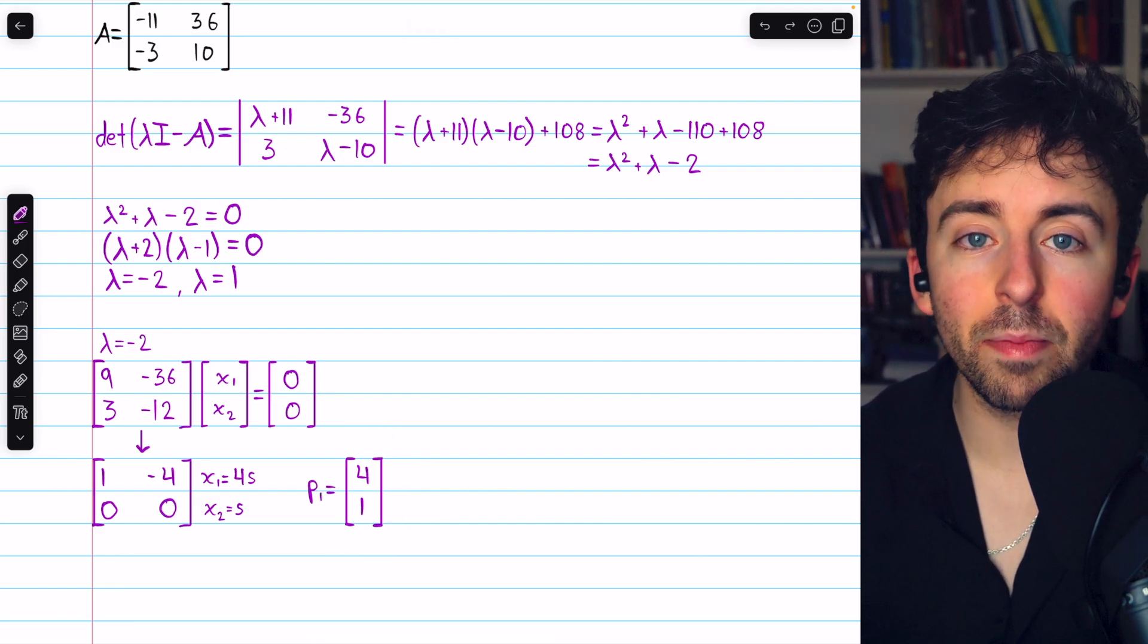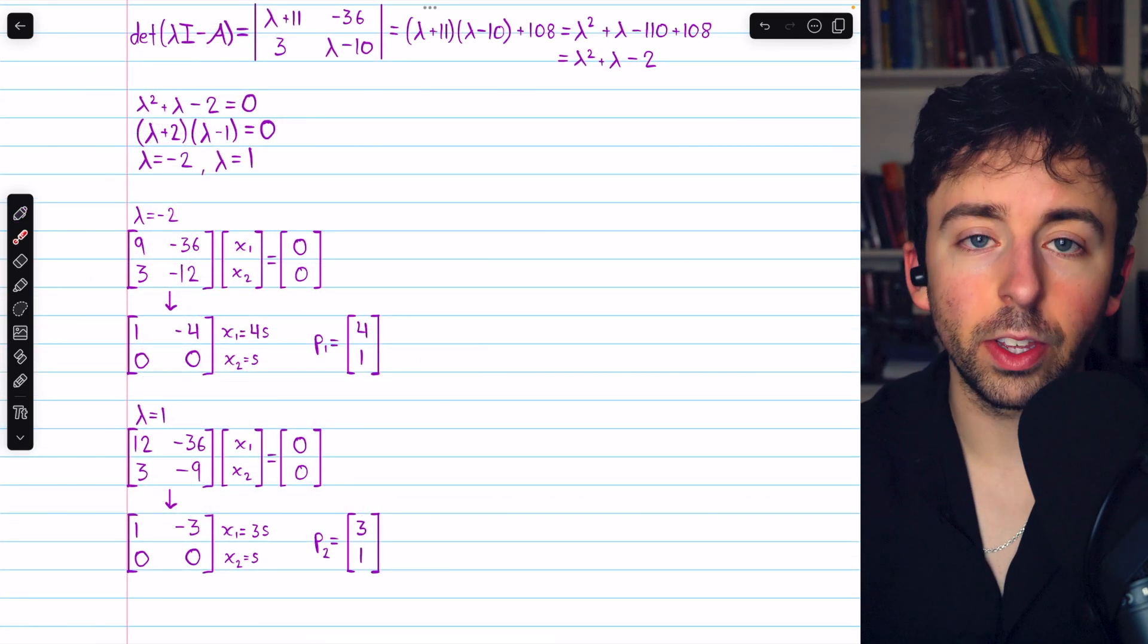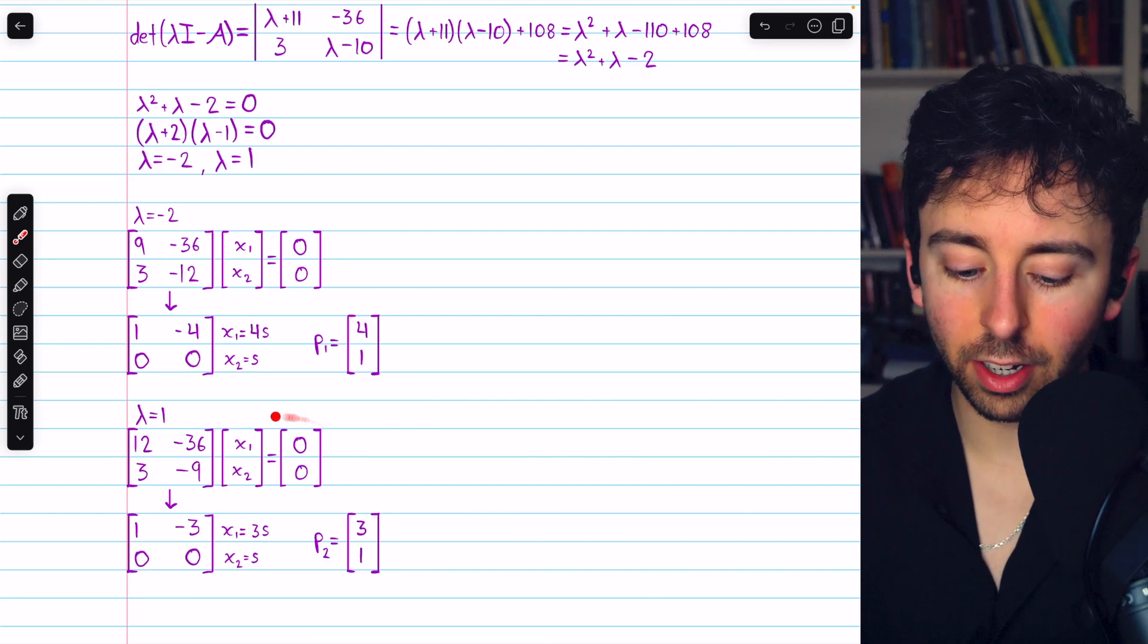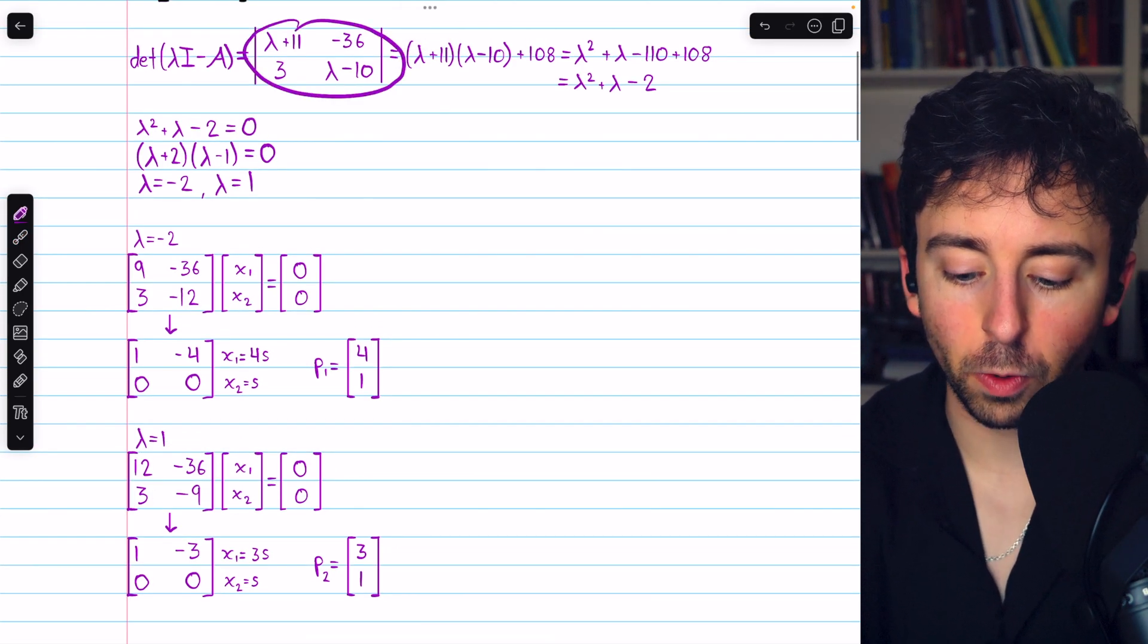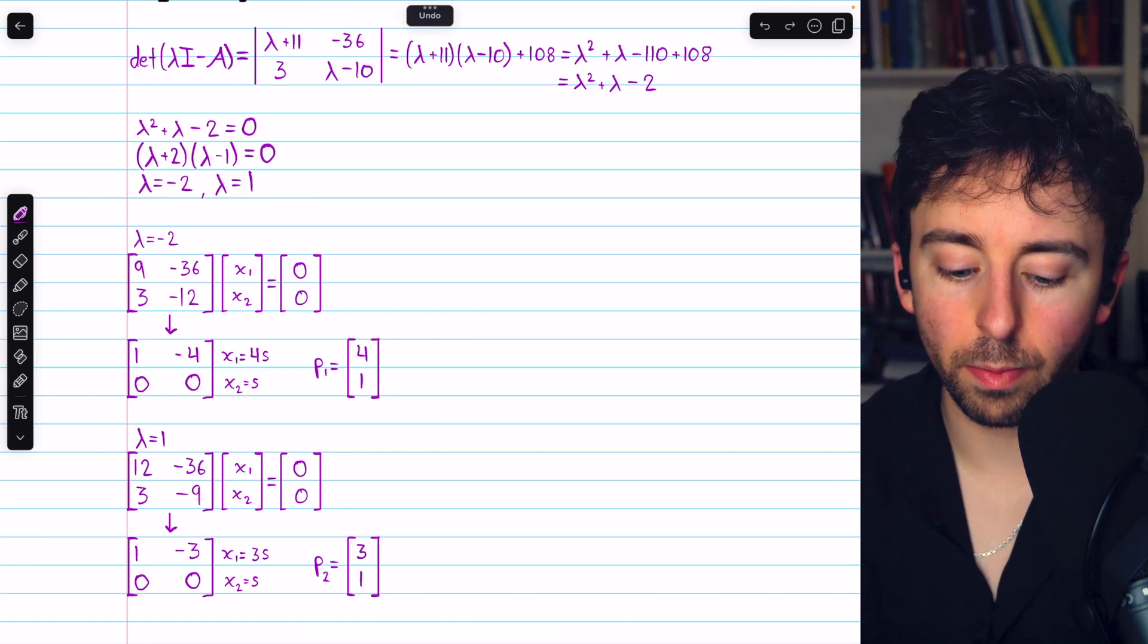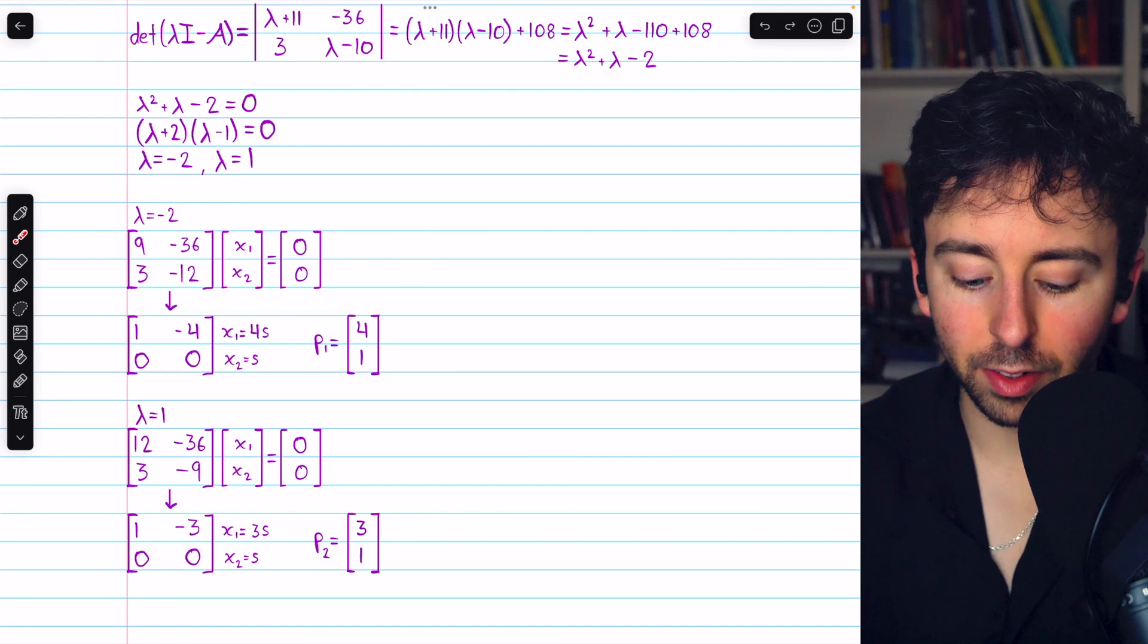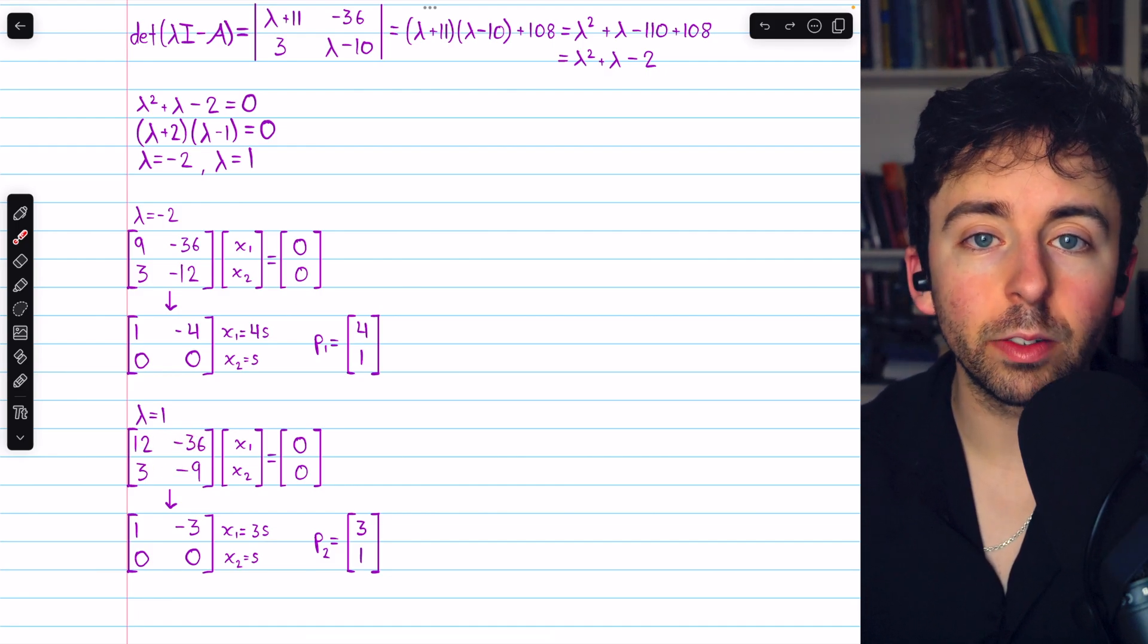Now we have to do the same thing for the other eigenvalue, positive 1. Again, for this eigenvalue, the eigenvectors are the non-zero solutions to this system, where this coefficient matrix is just this matrix, but with λ = 1 plugged in. Again, we can perform Gauss-Jordan elimination. We just have to subtract 1/4 row 1 from row 2, and then divide row 1 by 12.